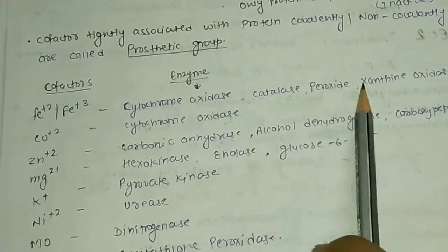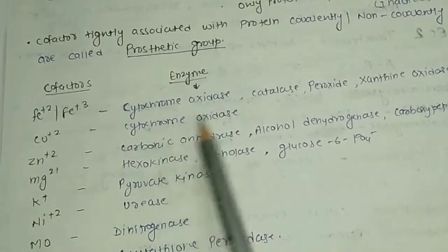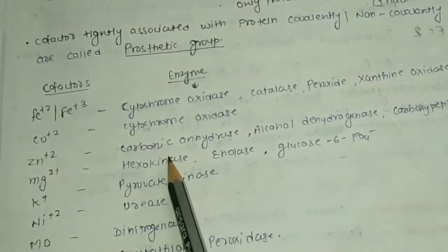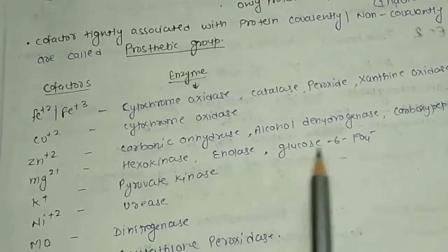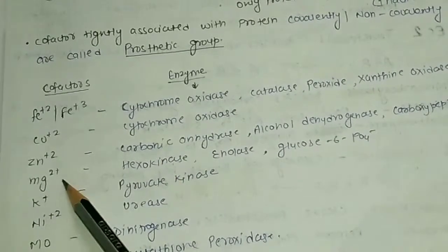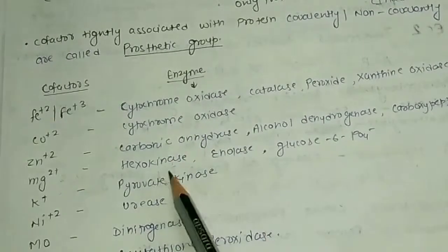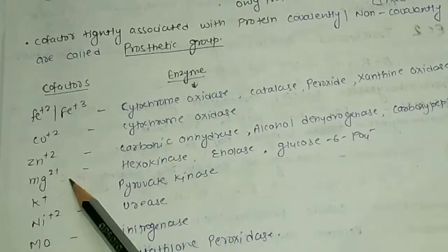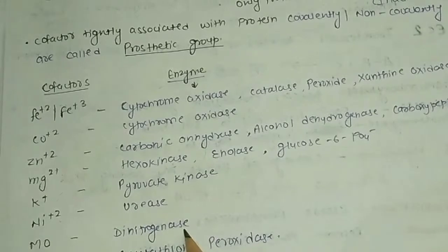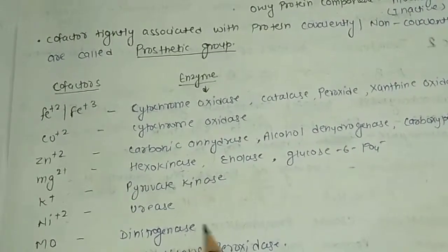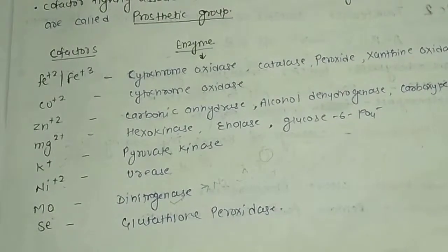Cytochrome oxidase, catalase, peroxidase, and xanthine oxidase contain Fe2+ and Fe3+ as cofactors. Copper (Cu2+) is the cofactor for cytochrome oxidase. Zinc (Zn2+) is the cofactor for carbonic anhydrase and alcohol dehydrogenase. Hexokinase and enolase use Mg2+. Pyruvate kinase uses K+. Urease uses nickel (Ni2+). Nitrogenase uses molybdenum (Mo). Glutathione peroxidase uses selenium (Se).